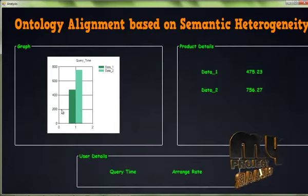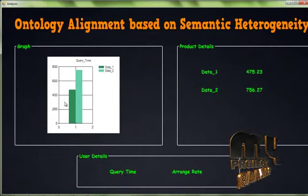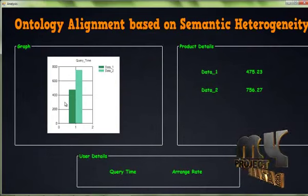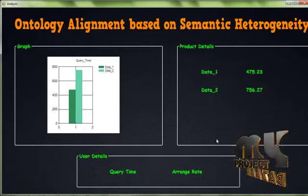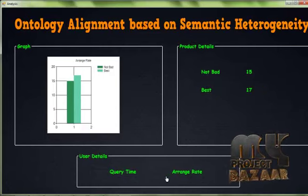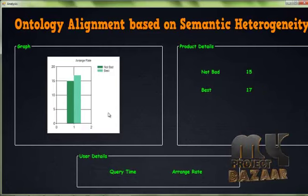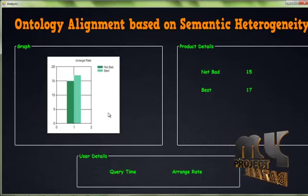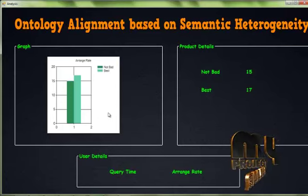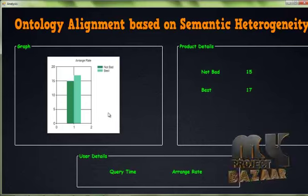Clicking Next Process shows query timing analysis. Query timing analyzes the executing time for Data 1 and Data 2. Then Arrange Rate Timing: after classifying, the data is arranged by best time and not-best time. This calculates the timing for our process. Finally, thank you.